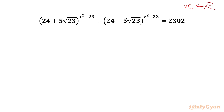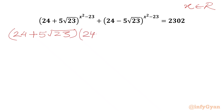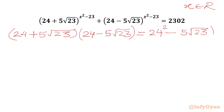Let's get started by multiplying our bases. I will write (24 + 5√23) multiplied with (24 − 5√23). So we have an (a + b)(a − b) form, and we can apply the difference of two squares formula.